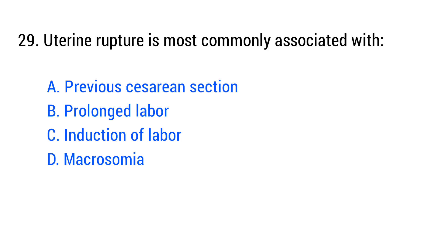Question number twenty-nine. Uterine rupture is most commonly associated with? The right answer is option A: Previous caesarean section.